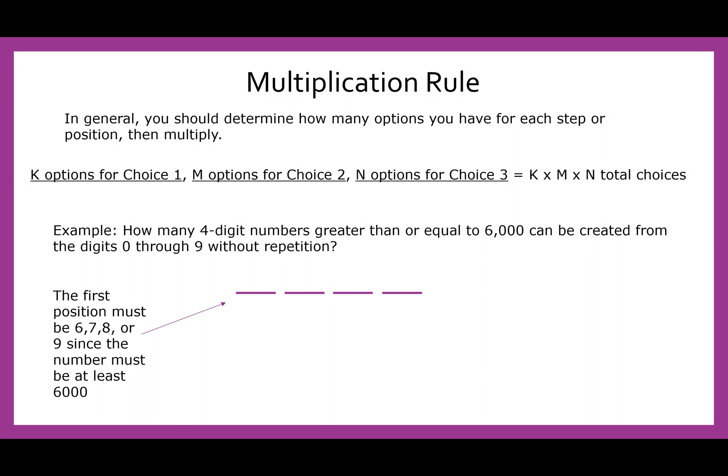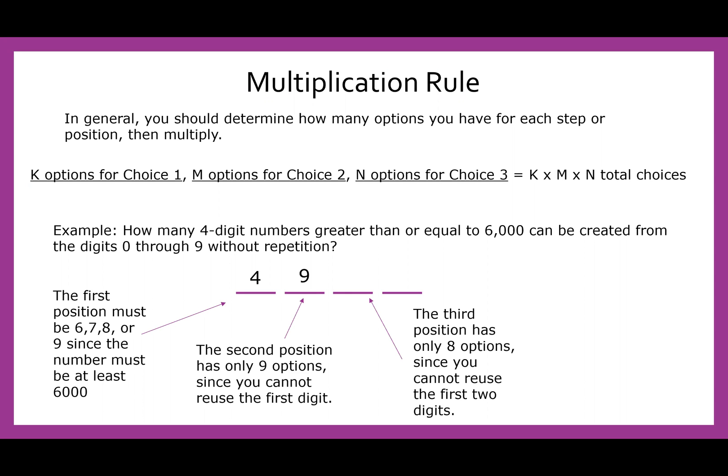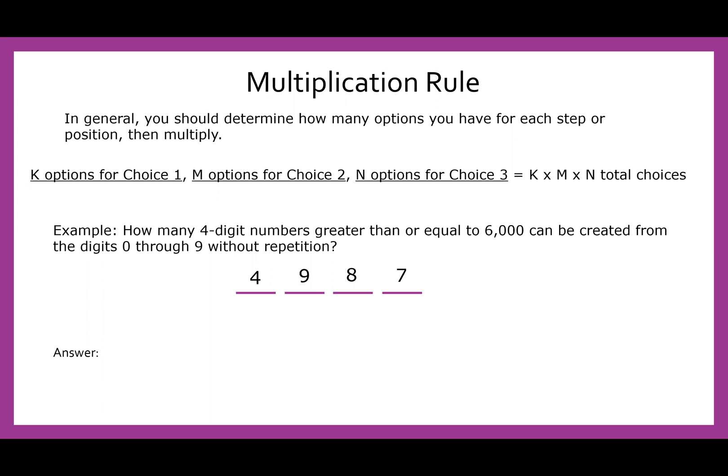In the first position, because our number has to be 6,000 or greater, the first digit has to be six, seven, eight, or nine. And that gives us four options. For the second position, even though we have digits zero through nine, that's 10 digits, we can't repeat the first digit. So now we only have nine options. And then we only have eight options. And then we only have seven options. So you can see how this depletion happens because we're not allowing repetition. So for us, we would have four times nine, times eight, times seven, or 2016 options.